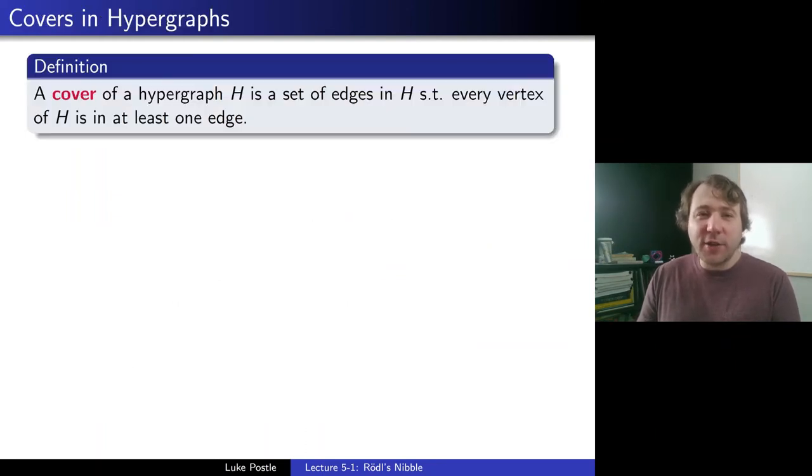All right, so let's talk about this more in action. Actually, it carries over from the Erdős-Hanani conjecture from designs to something a bit more general. So this is called covers in hypergraphs. A cover of a hypergraph H is a set of edges in H such that every vertex of H is in at least one edge. So this is where we want to cover a hypergraph with a set of edges. And that's dual to matchings, where you want a set of edges that are disjoint where every vertex is in one of the edges. So instead of packing edges, here we're actually covering the vertices with the edges.